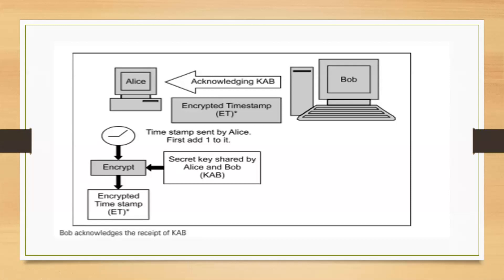Only Alice and Bob know the KAB key. So Alice can open the packet, verify the incremented timestamp, and confirm she is communicating with Bob. Once confirmed, a session is created between Alice and Bob, and they can start communicating securely over an insecure channel.